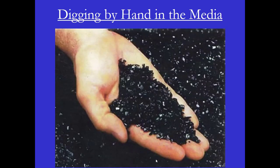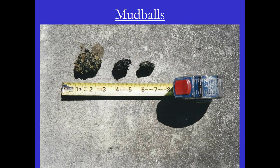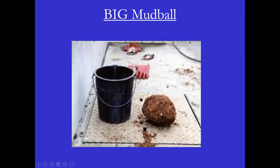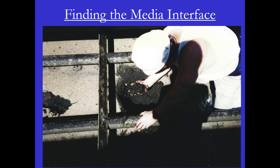Now here's the part I like — getting into a filter and digging into the media. When you dig around, you can find a lot of things. One thing you might find are mud balls — here's a medium size and then smaller ones. However, mud balls can be quite big, as you can see compared to this bucket. Mud balls indicate that the filter is not properly being washed. When inspecting the media, you want to dig down and feel it. Does it feel really slimy? Does it feel like there's a gross overfeed of coagulants? How deep is the top layer of mud? How deep does it go down into the media?